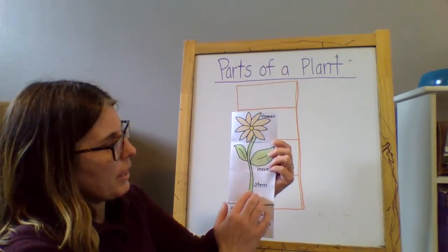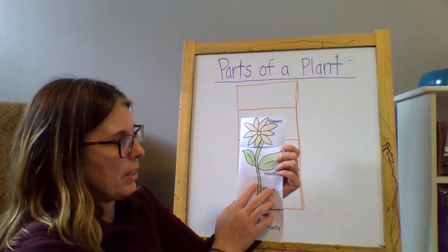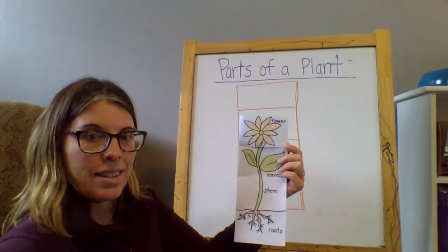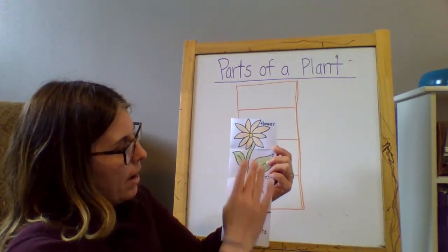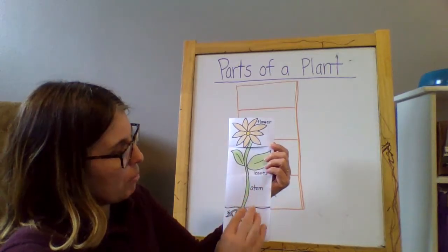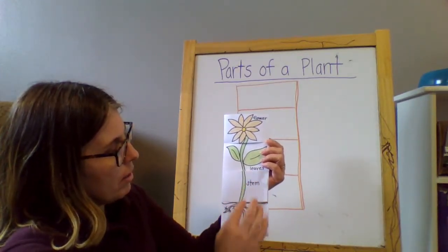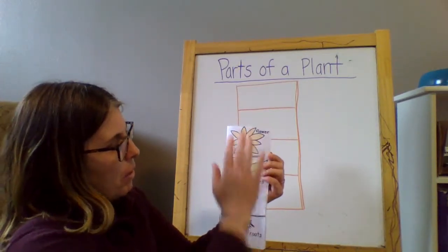And then we have the stem. What's the job of the stem? The stem supports the plant and also helps bring nutrients and water from down here by the roots up to different parts of them.